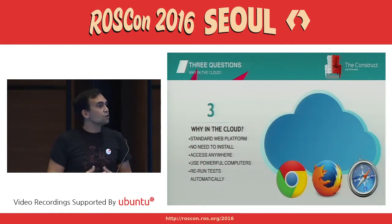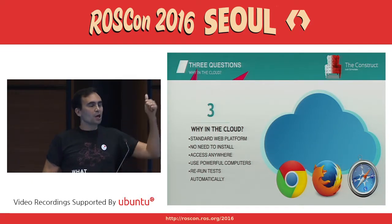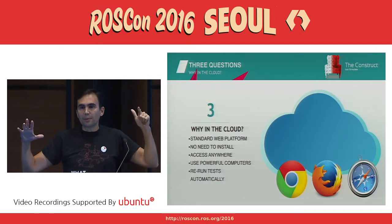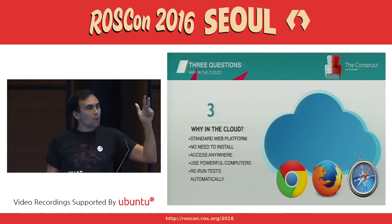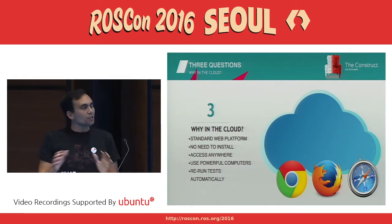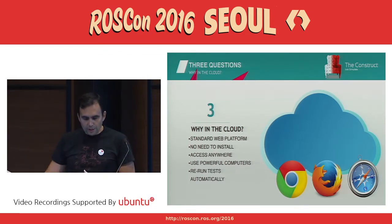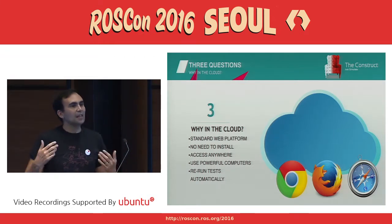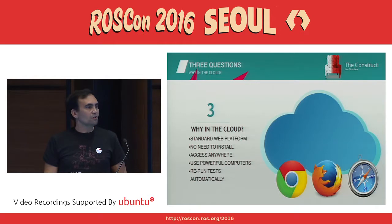Why in the cloud? Because having a common ROS interface to algorithms and robots, a common setup environment, we are providing a common way of interacting with that environment using a standard web platform where you don't need to install anything. You can access from anywhere and use the powerful computers of the cloud. And again, it allows you to very easily rerun tests automatically.